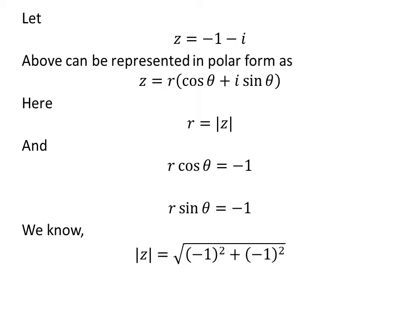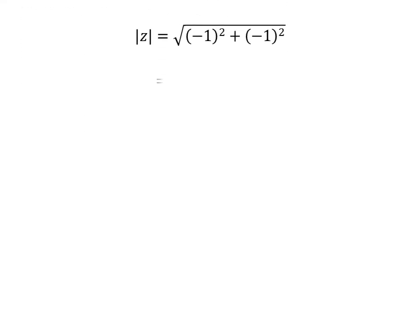As per the definition, modulus of Z is equal to square root of square of minus 1 plus square of minus 1. As square of minus 1 is 1, modulus of Z is equal to square root of 1 plus 1. So, modulus of Z is equal to square root of 2, which is equal to r.